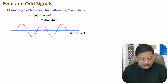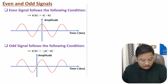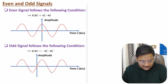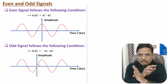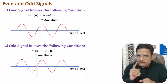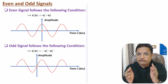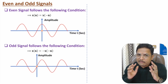For an odd signal, the condition is x(n) = −x(−n). If you flip the signal, it becomes the negative of the actual one. For example, if you have sin(ωt), after a flip it becomes −sin(ωt). So to summarize: if flipping gives the actual signal, it is even; if flipping gives the negative of the actual signal, it is odd.